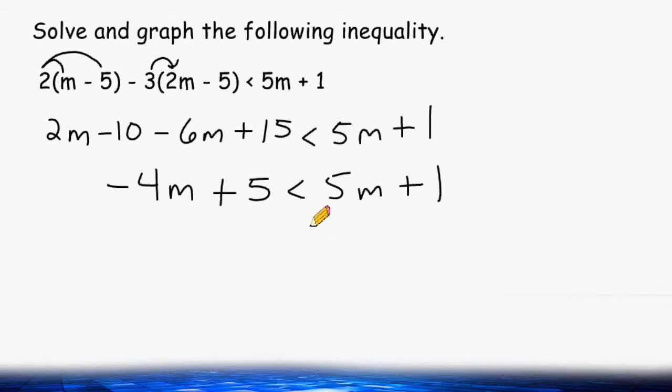Right beneath 5m let's write negative 5m, which is the opposite, and that will completely cancel itself out. And right underneath negative 4m we write negative 5m. If we combine these terms together, that would give us negative 9m, but we still have this plus 5 over here. And on the right hand side of our inequality all we have remaining is positive 1.